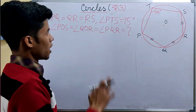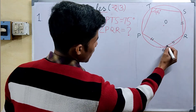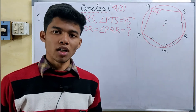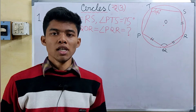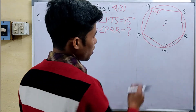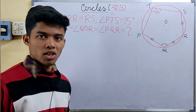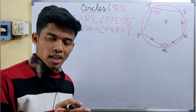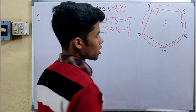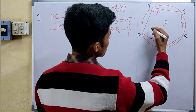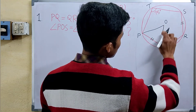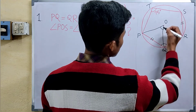We need to find QOR. Since PQ equals QR equals RS, the equal chords subtend equal arcs. According to the theorem, equal arcs subtend equal angles at the center. So the arc is equal to A, and the angle at the center — which is POQ — is produced by the corresponding arc.